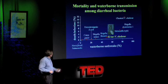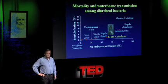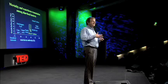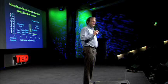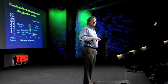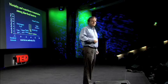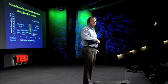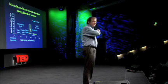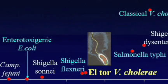I focused on the El Tor biotype of Vibrio cholerae — the species responsible for causing cholera. We understand why it's so harmful: it produces a toxin. That toxin, released when the organism gets into our intestinal tract, causes fluid to flow from cells lining our intestine into the lumen, the internal chamber. That fluid exits, flushing out thousands of competitors that would otherwise make life difficult for the Vibrios.